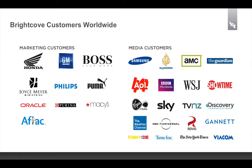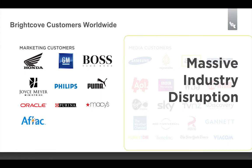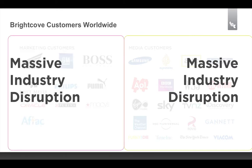This is an example of the customers we have in these segments today — many different types of organizations and some great brands. What we found is that both segments — media customers and marketing customers — are going through massive disruption in their industry. As we talked to the personas, this notion of disruption is something they really connect with. So our messaging ultimately starts with a disruption message, and understanding that macro industry context is important when considering your personas.